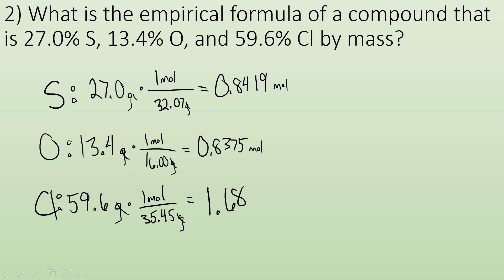So now I have to simplify all these. So I'm going to find the smallest number and divide everything by that. Smallest number is 0.8375. So I'm going to divide every number by 0.8375, and I get almost exactly 1 for that, so I'm going to just round it to 1. I get exactly 1 for oxygen, and I get 2 for chlorine.